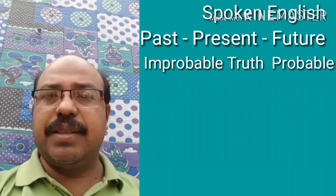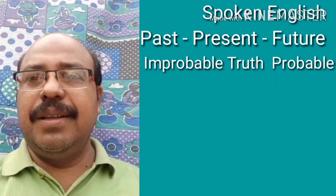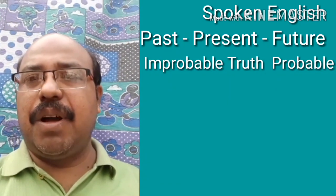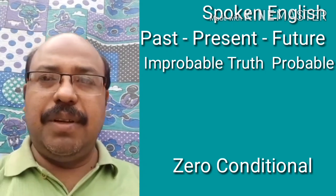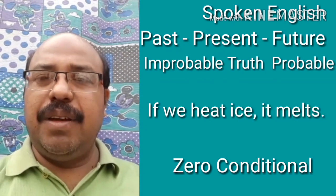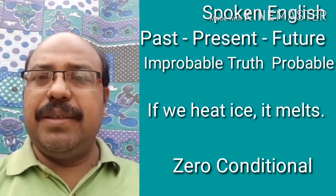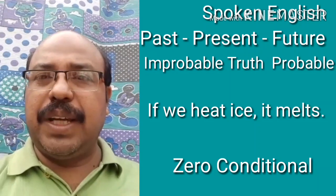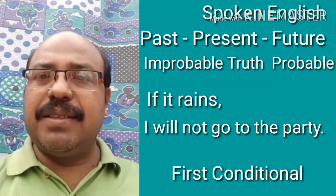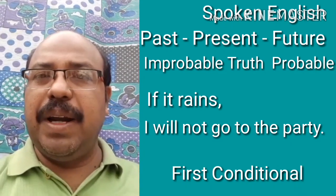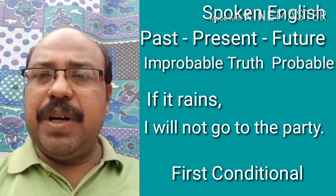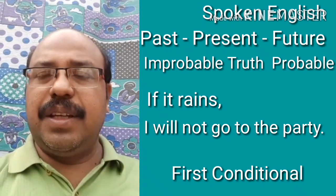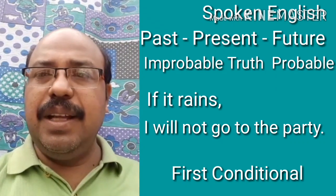Now I want to explain the four conditional sentences and the abstraction. When I talk about zero conditional I basically talk about truth, scientific truth, or fact — if we hit ice it melts. It always happens, so we use present tense in both clauses. When I say if it rains I will not go to the party, there is a probability, so we start from the present and go to the future: the if-clause in present tense and the result clause in future tense.